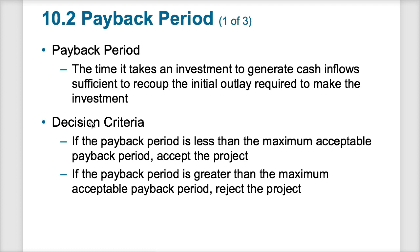Think of it this way: you want to buy two different pizza restaurants, both costing $100,000 to purchase. One restaurant generates $10,000 a year of cash flow, the other generates $20,000 a year. At $10,000 per year, it'll take 10 years to pay back the initial investment. At $20,000 per year, it'll only take 5 years. Clearly the restaurant that takes only 5 years to pay back would be the better choice. But if we set a criterion where we only accept projects that pay themselves back within 3 years, we have to reject both restaurants.